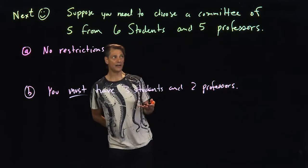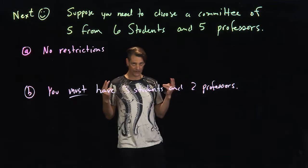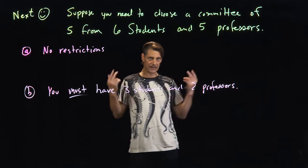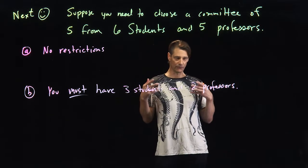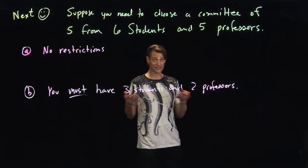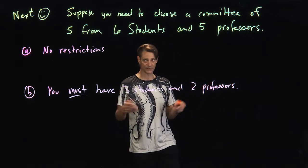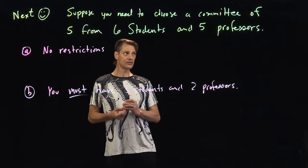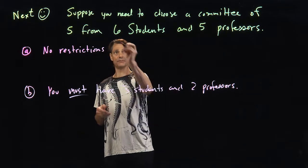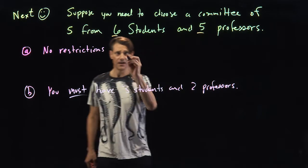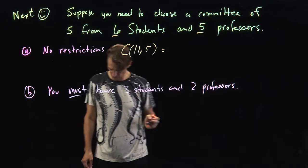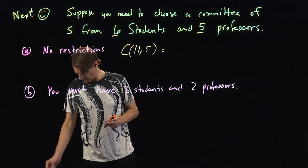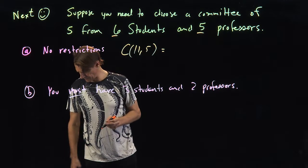Well, number one, remember in general parlance that we're using, committee means order doesn't matter. In certain kinds of committees it does, but for what we're doing, the word committee in this context usually means order doesn't matter. If order doesn't matter, we're just choosing five from a possible six plus five, 11. This is just C(11,5). And according to Wolfram Alpha, this is 462.